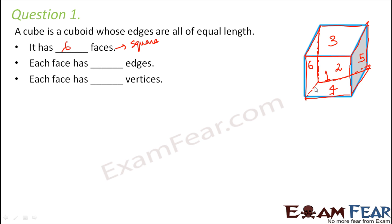And how many vertices? How many points are there where the edges meet? One, two, three, four, five, six, seven, and eight. So there are eight vertices.